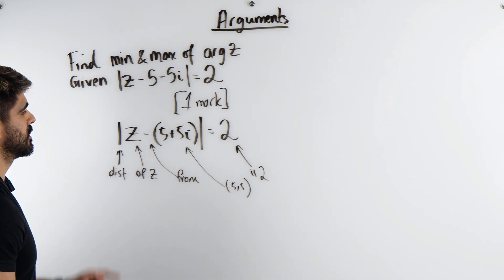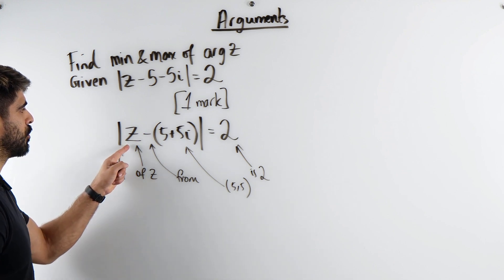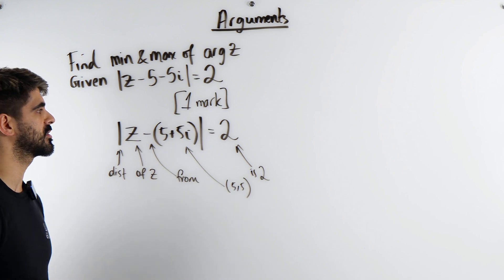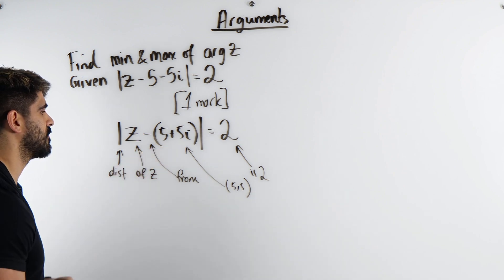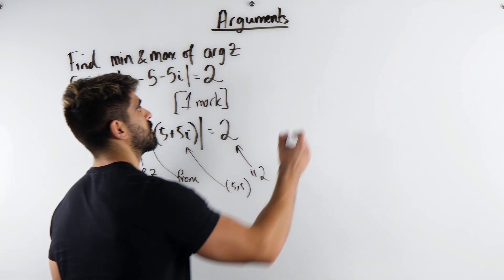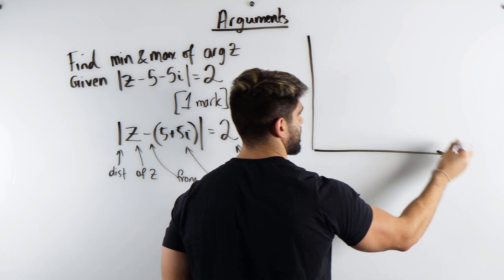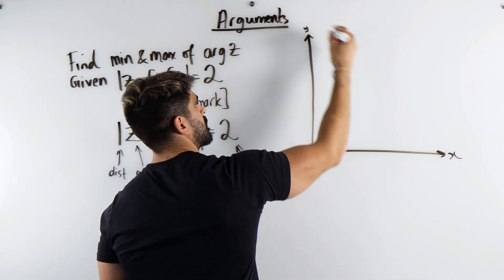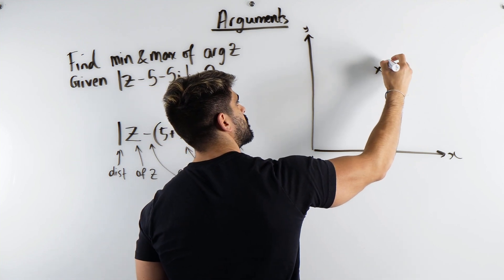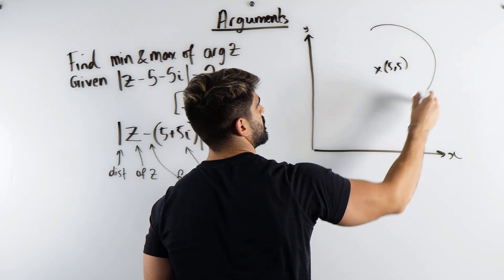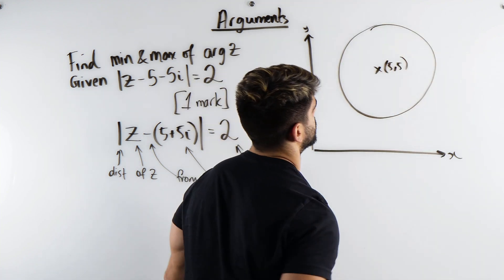The distance of all points from this point is fixed at 2. This is going to be a circle with center 5, 5. So if we were to draw a diagram we'd actually only take the positive side. We have 5, 5 and we have some circle.